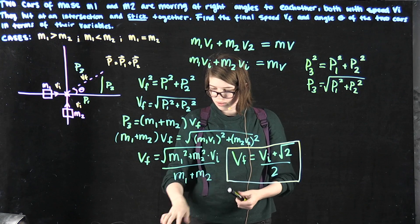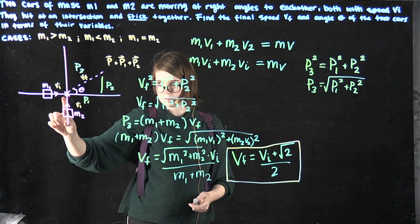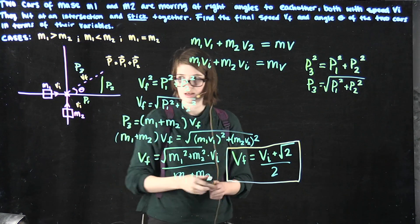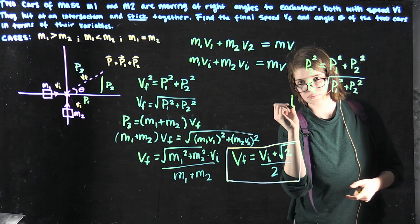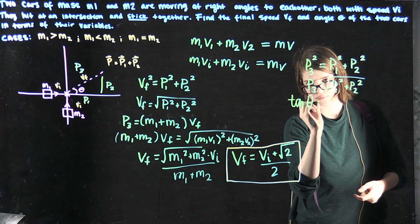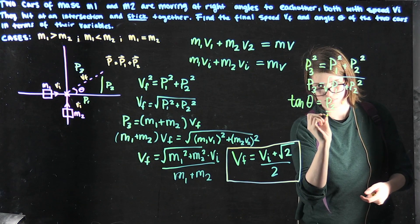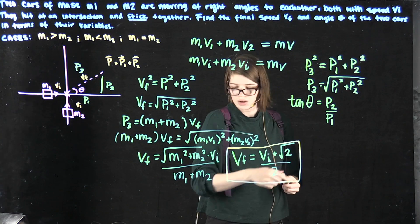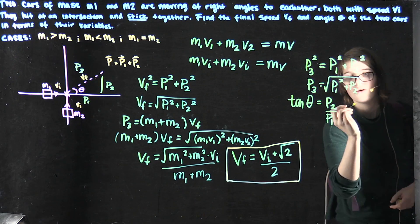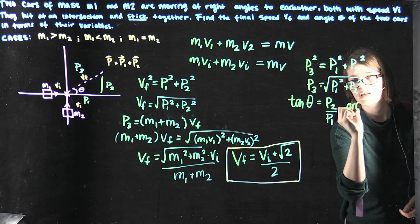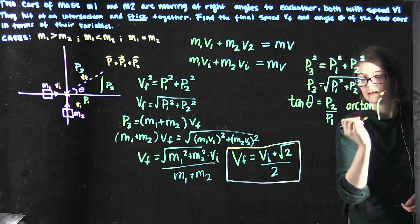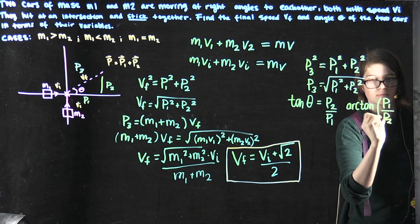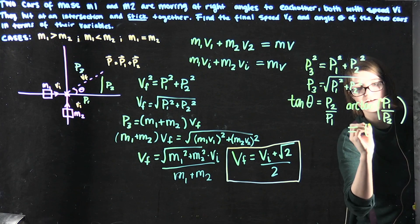Because we have tangent, which is opposite over adjacent, we can say that tangent of theta equals p2 over p1. Because we want to find the angle theta, we can then say that arctan, or inverse tangent, of p1 over p2 is equal to our angle theta.